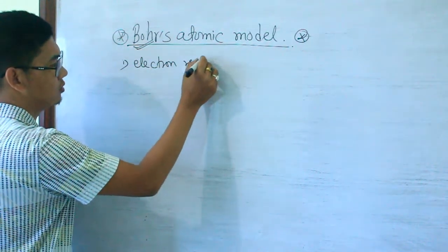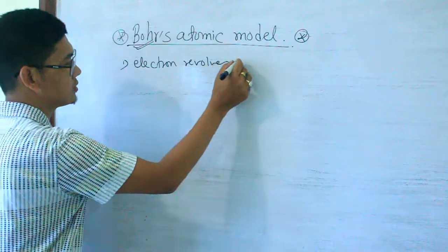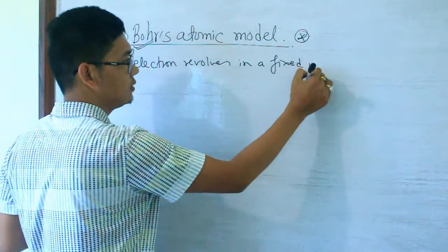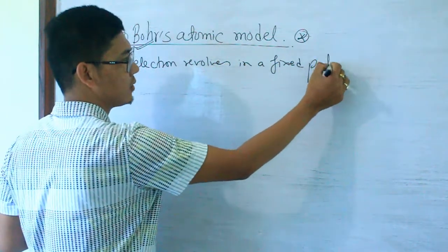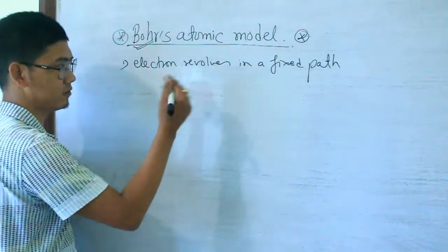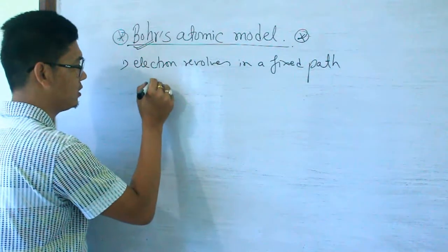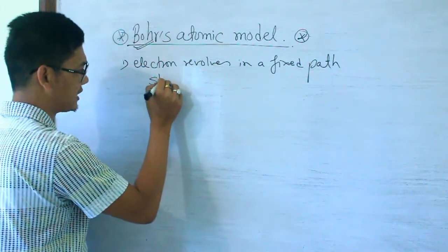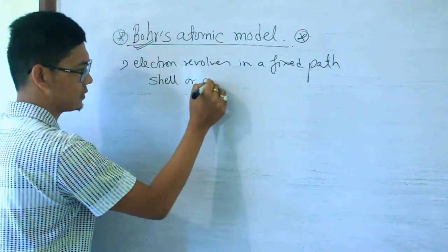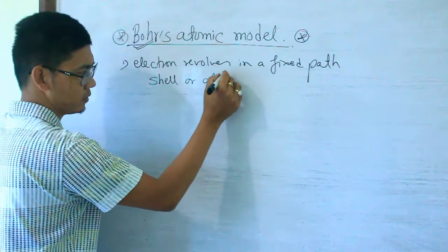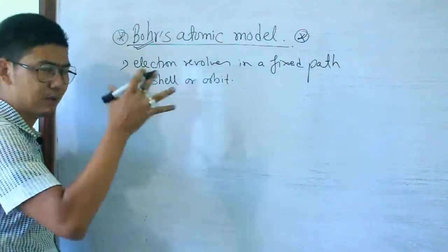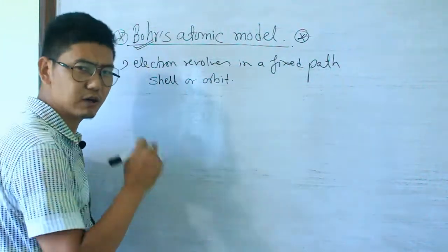Electron revolves in a fixed path. The fixed path is called an orbit. So, an electron revolves in a fixed orbit.